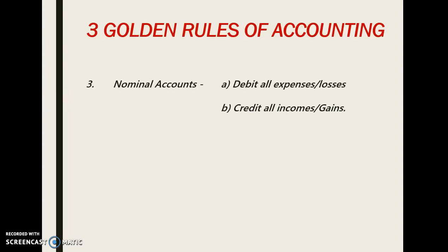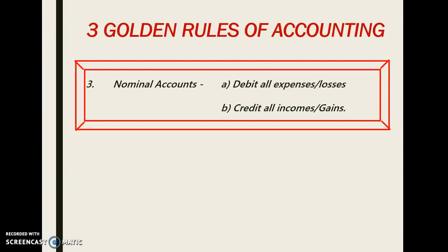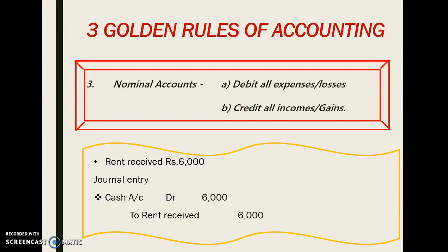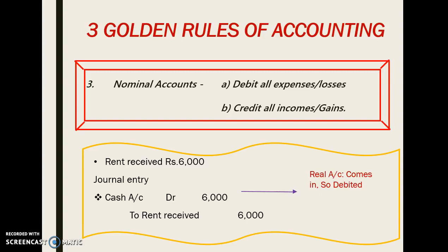The third golden rule relates to nominal account. It says: debit all expenses and losses, credit all income and gains. Example: rent received rupees 6000. Journal entry — cash account debit 6000, to rent received 6000. Cash account is a real account and cash is received so it is debited as per the second rule. Rent received is income for us so we credit it. In short, as per the third golden rule — nominal account: debit all expenses and losses, credit all incomes and gains.